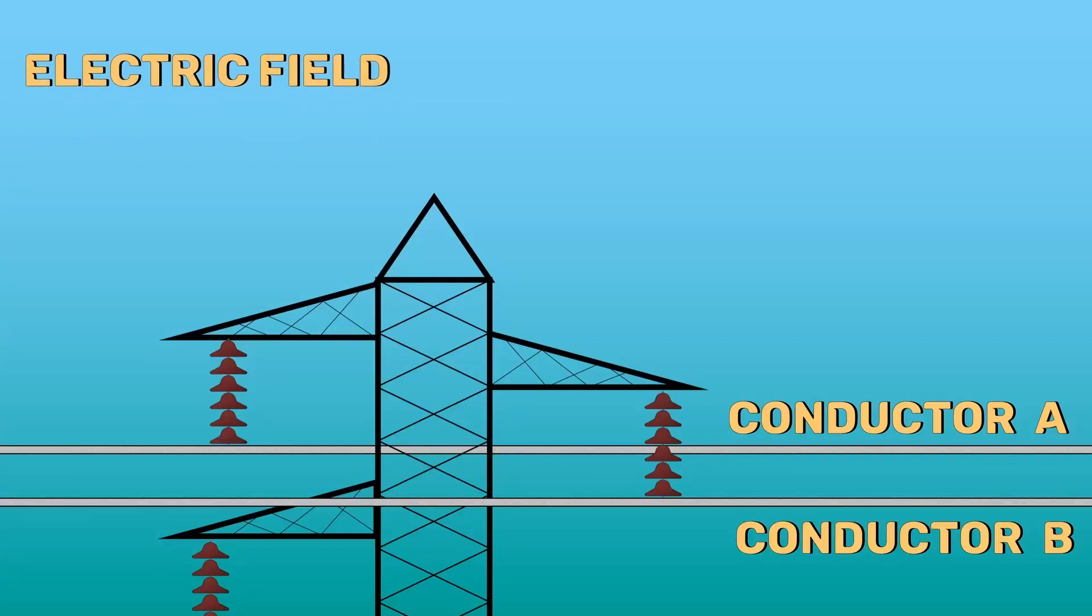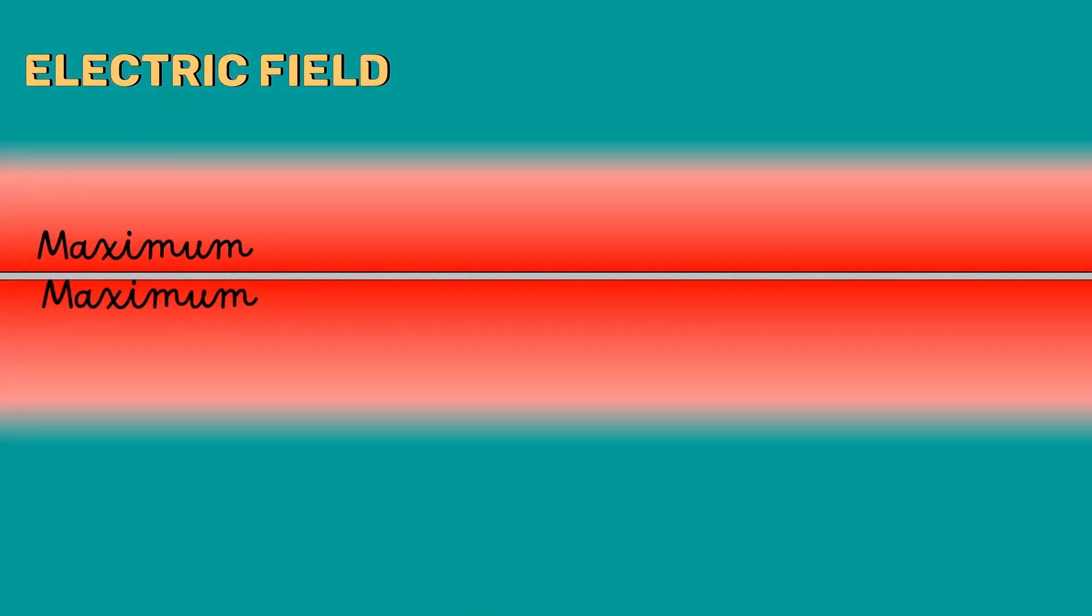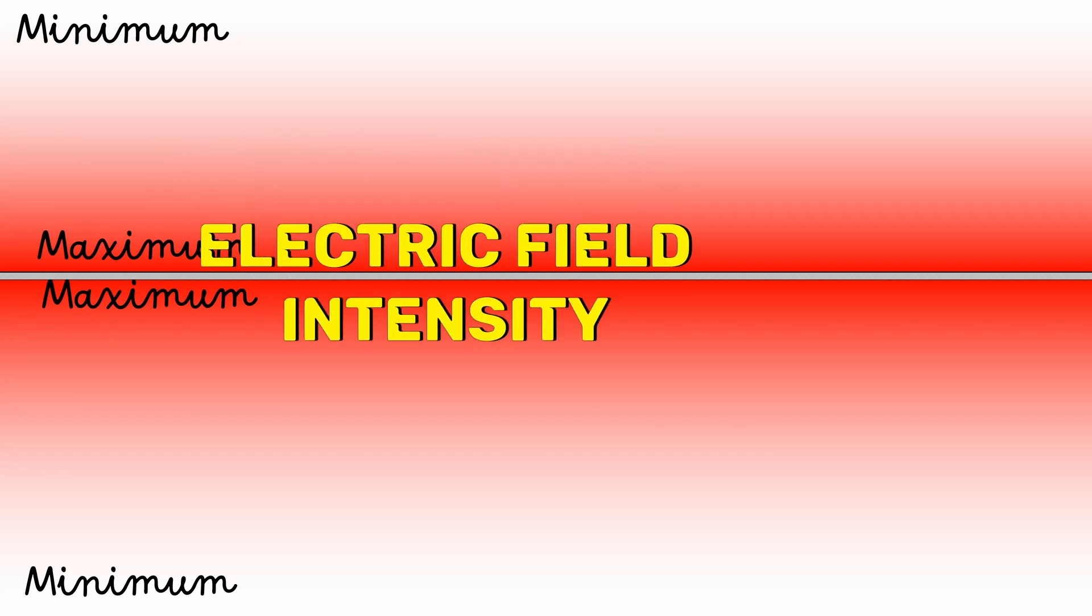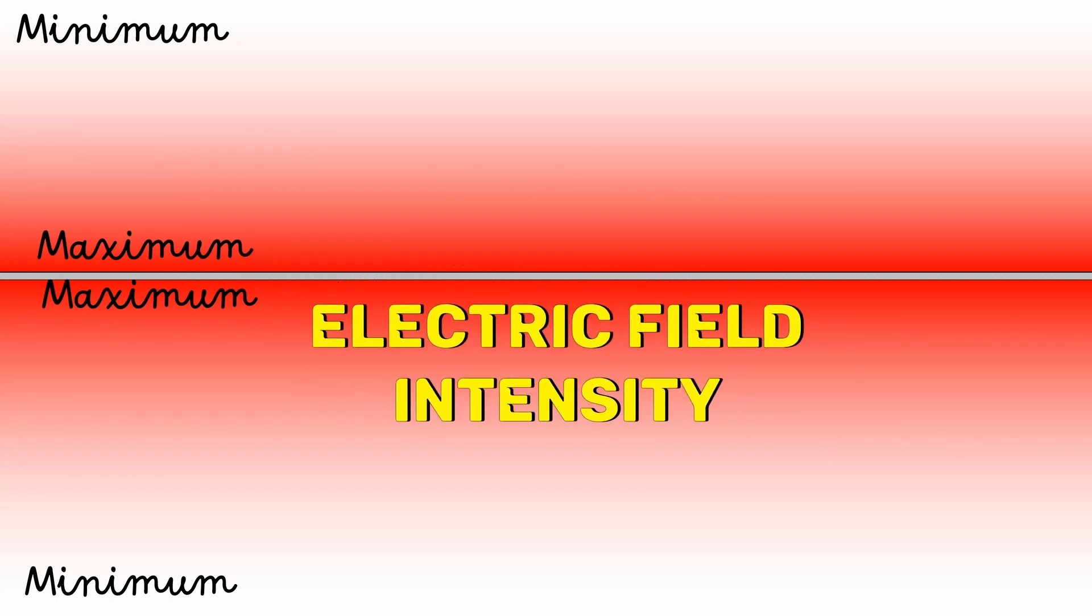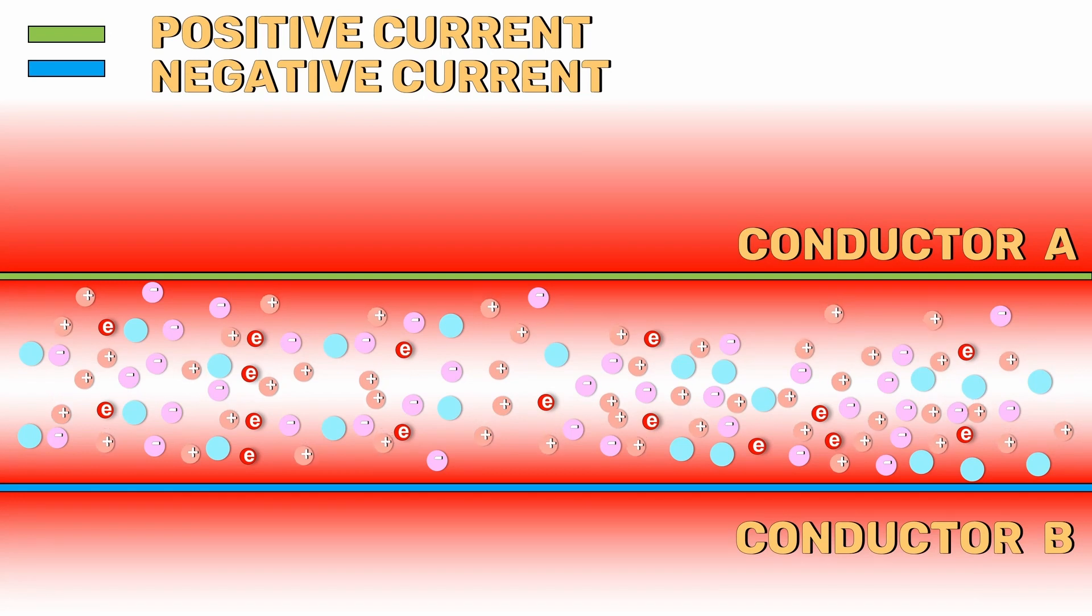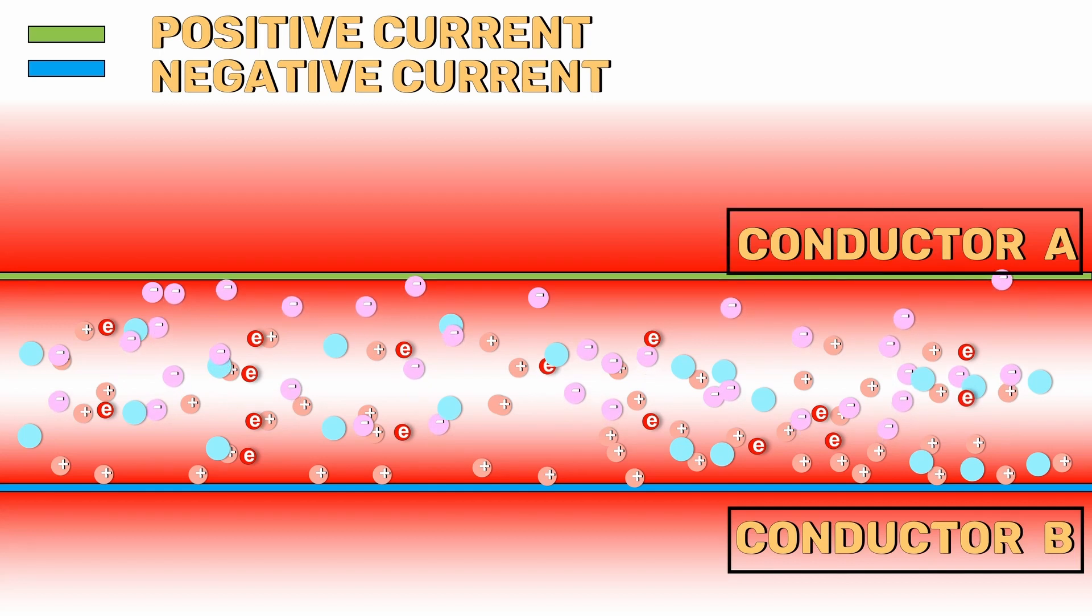The electric field inside these conductors will be zero. The strength of the electric field will be maximum at the surface of the conductor and it will decay away from the conductor. This electric field strength is also known as the electric field intensity. We know that when a charged particle is present in an electric field, it experiences a force. It may be a force of attraction or repulsion. Therefore, in our case, the positive charges are attracted towards conductor B and the negative charges are attracted towards conductor A.